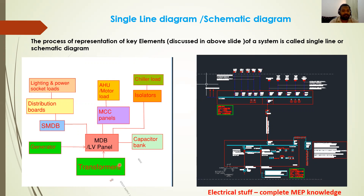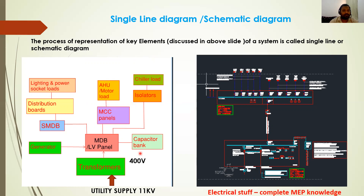The distribution transformers are step-down transformers — stepping down from 11 kV utility supply to 400 volts — feeding the main distribution board. The main distribution board also has a generator source, a capacitor bank to improve power factor, and feeds AC loads, motor loads, and lighting and power loads through SMDBs and distribution boards.